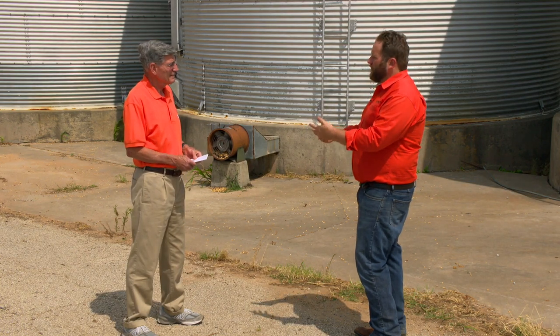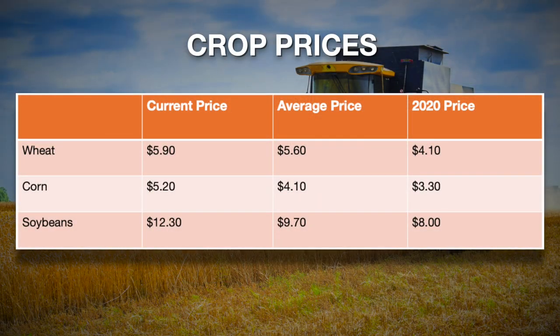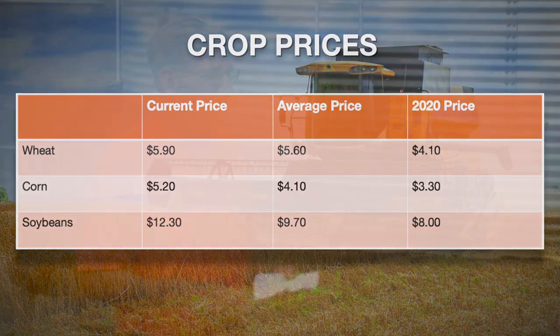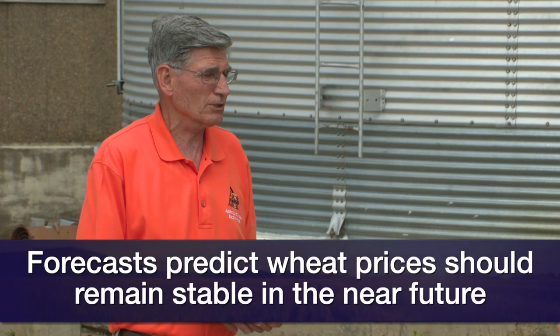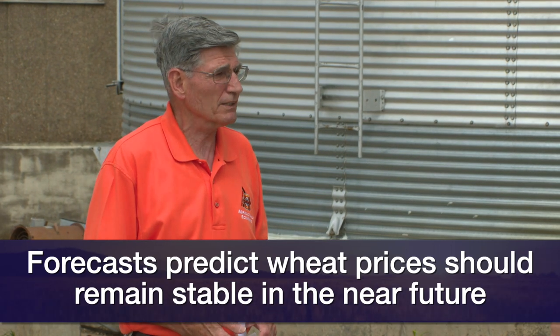What advice would you offer producers now? Looking at history, right now you can sell wheat at about $5.90. The five-year average for June, July, and August is $5.60, so we're a little above that — last year it was $4.10. You can forward contract corn at $5.20, with the five-year average at $4.10 and $3.30 this time last year. Soybeans are $12.30 for a forward contract versus a $9.70 five-year average and $8 this time last year. So you've got relatively good prices. I'd take advantage of some with wheat. There's a long-range forecast that these prices are going to hold over the next few years. I would sell some wheat and may store some into July and August just to see what happens. Kim Anderson is Crop Marketing Specialist at Oklahoma State University.